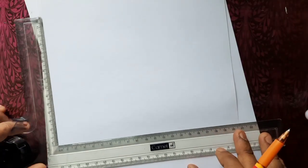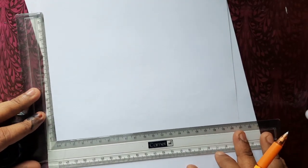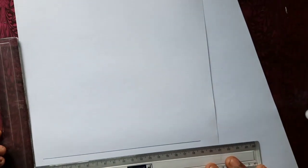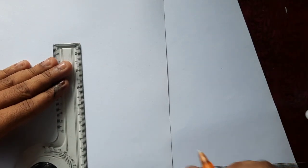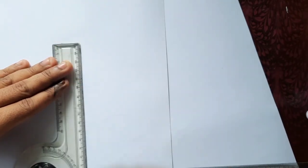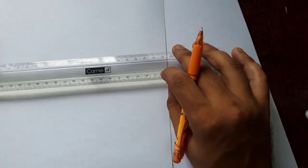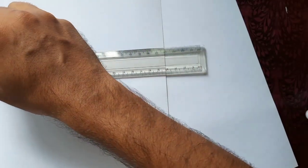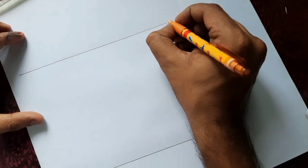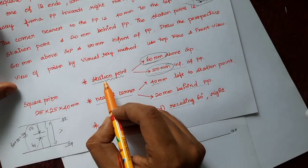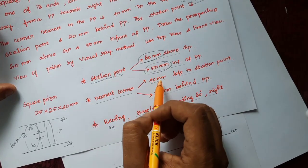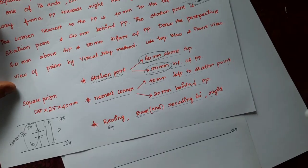I draw the ground plane as a horizontal line, then the picture plane 140 mm above it. The first data is about the station point: 60 mm above the ground plane and 50 mm in front of the picture plane. I draw a vertical line perpendicular to both planes, and on that line, I mark the station point S — S-dash near the front view side, S near the top view side.